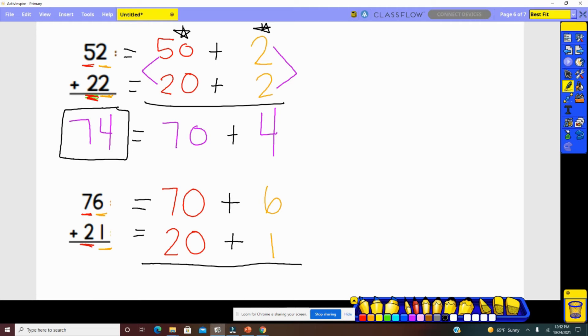Were you able to talk me through expanding 76 into 70 plus 6 and 21 into 20 plus 1? Great. Now, let's add the ones place. Does your expanded form show that 90 plus 7 will give us our answer?